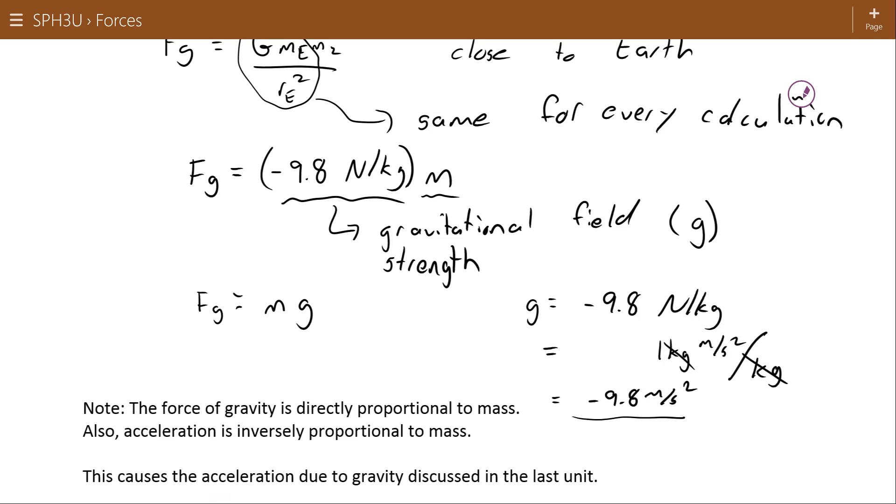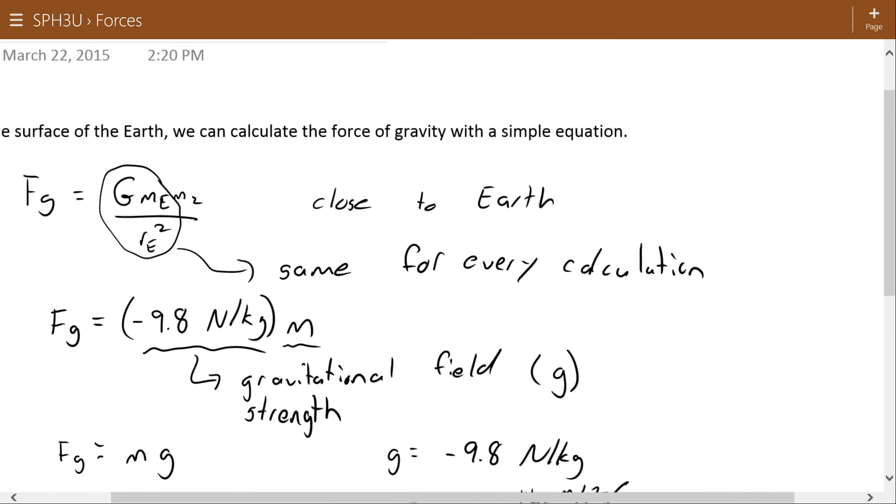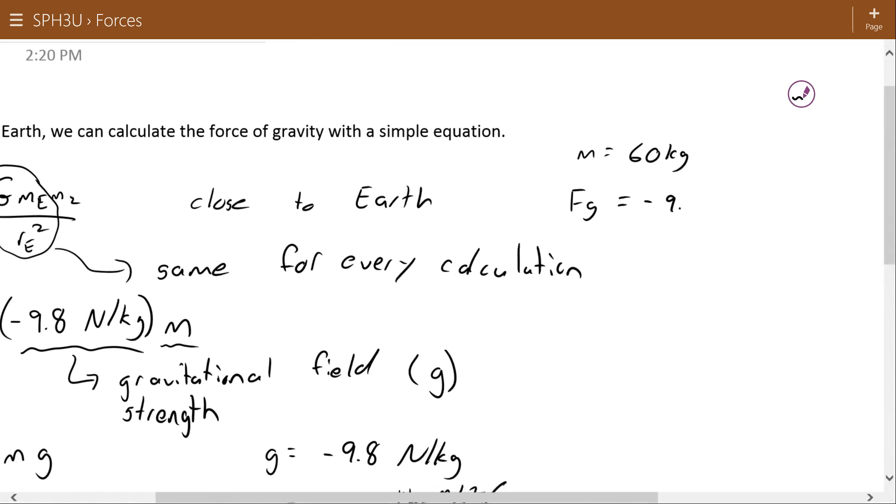Now I'm sure we remember this number from the last unit as acceleration due to gravity. So keep this simple. The force of gravity acting on let's say a 60 kilogram object, it is as simple as to say negative 9.8 newtons per kilogram times 60 kilograms. And we get a negative 588 newtons. Now you'll recall that the force of gravity is a vector so the negative sign on that number is a reference to direction. And this is assuming that our negative direction for something like a force of gravity will be down. So that's why it's negative 588 or 588 down.